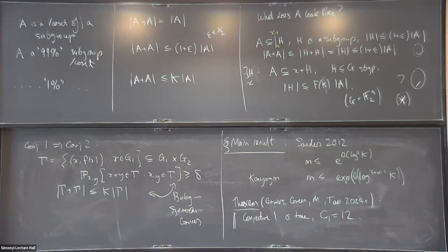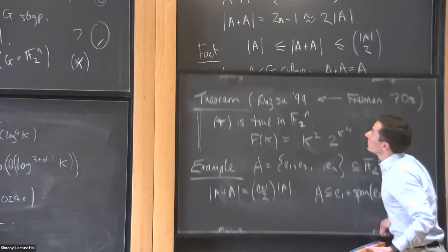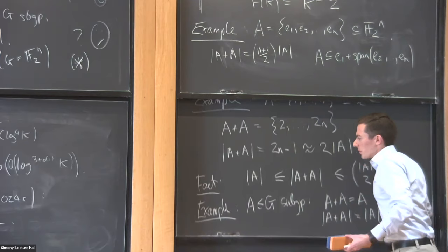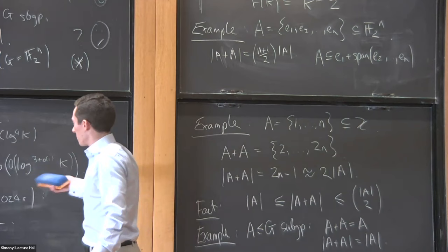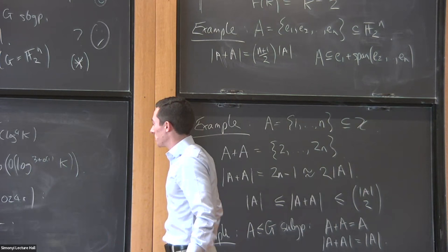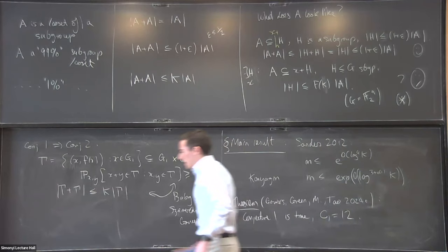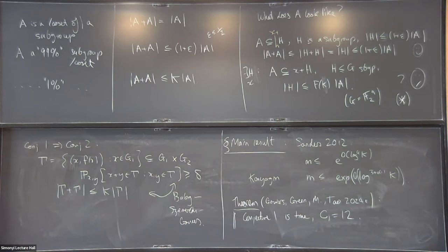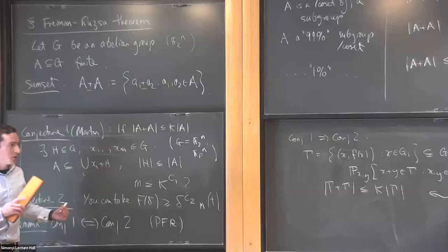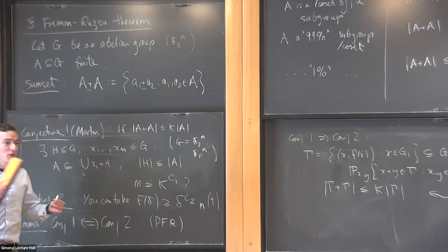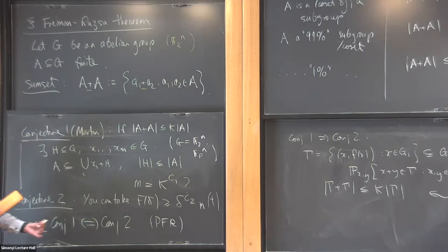The main result I wanted to talk about says that this conjecture is true. The implied constant C1 — the power of k you take — we don't know exactly what it is, but you can take C1 to be 12. We know it's slightly bigger than 1, but it could be around 2, or 1.5 or something. Lower bounds are surprisingly hard to come by. Let me say something about applications and the proof.